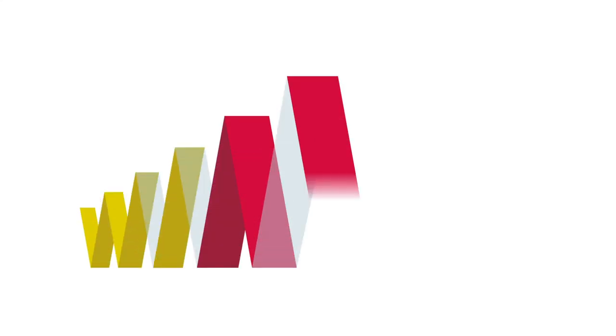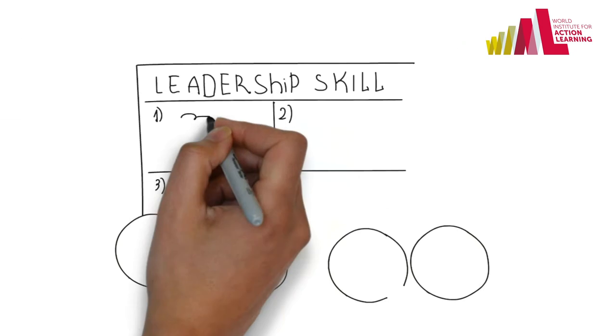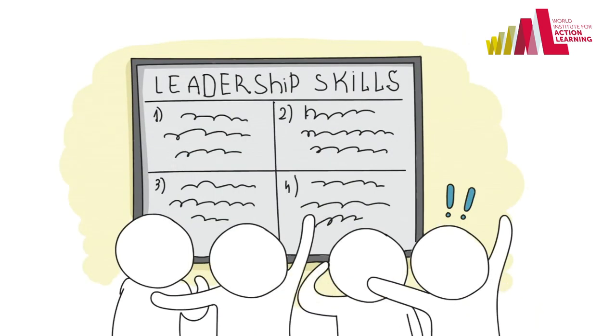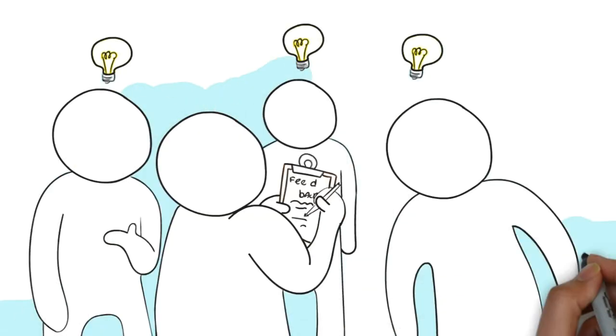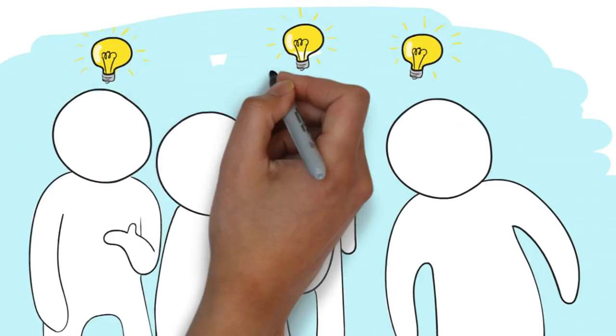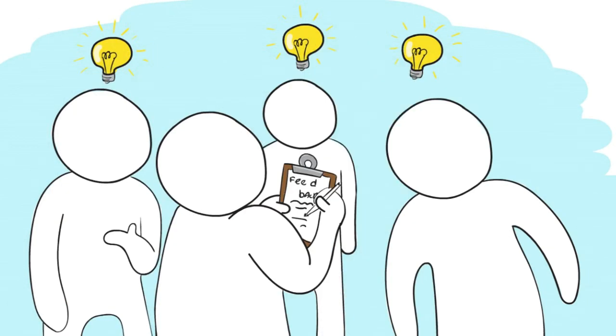Action learning is a team-based problem-solving process. Each participant identifies a leadership skill to develop. They use the sessions to practice, reflect, and share feedback about that particular skill, applying these skills...